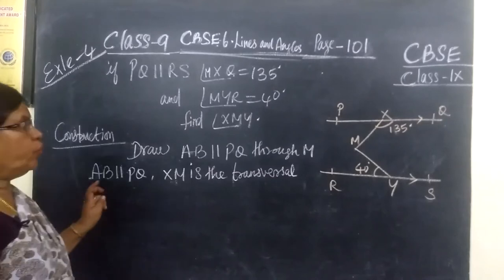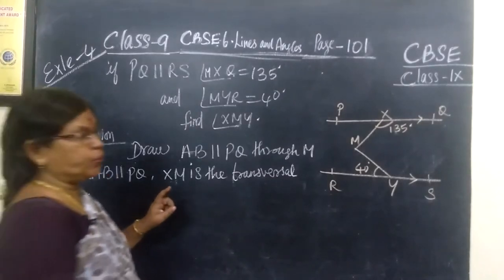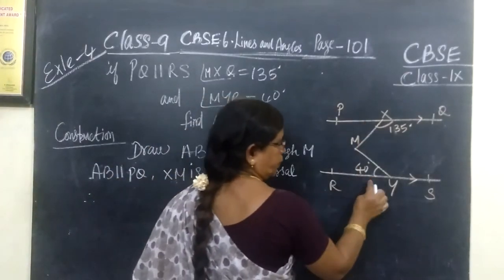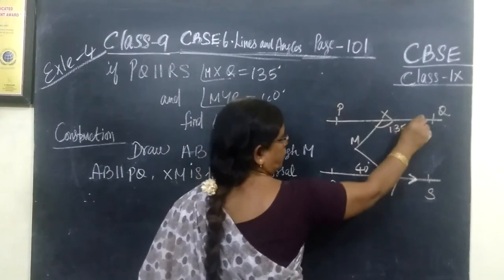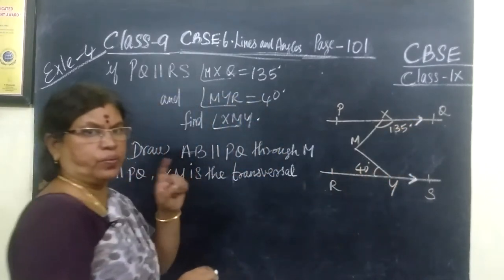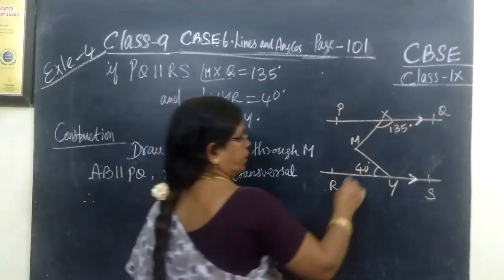So now example 4. You are given PQ parallel to RS. And these two angles are given. You want to find XMY.